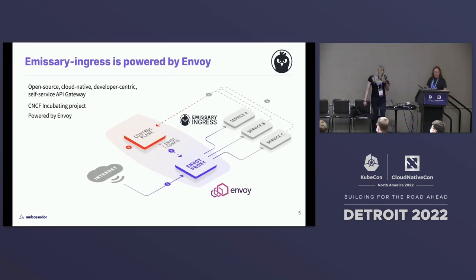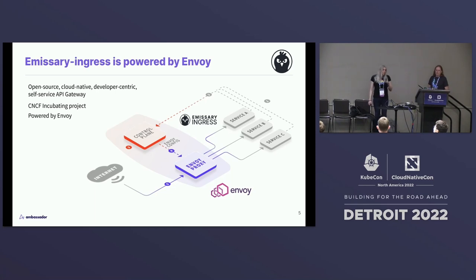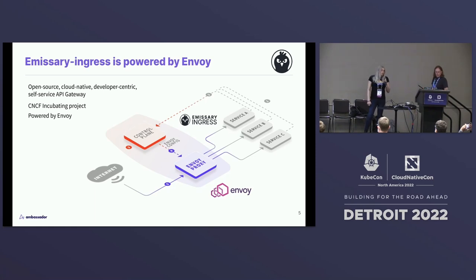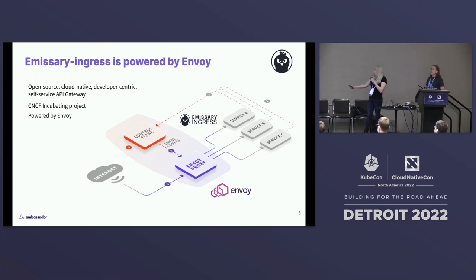A bit more detail on what it looks like in the cluster. Emissary focuses primarily on providing a self-service developer-centric experience for controlling the gateway. Emissary is powered by Envoy Proxy. It sits in your cluster, listening and watching for resource updates, and then spinning up and configuring an Envoy Proxy. Outside traffic talks directly with that Envoy Proxy managed by Emissary, and that gets the traffic to your backend services.